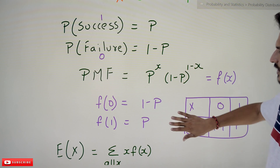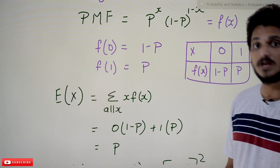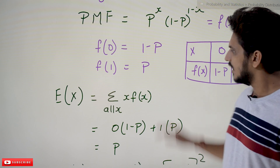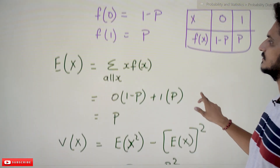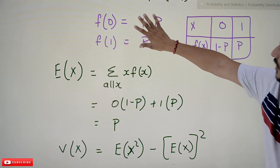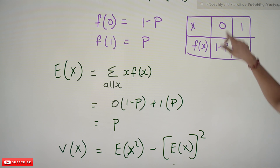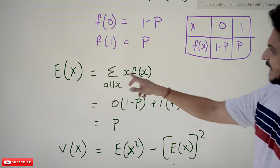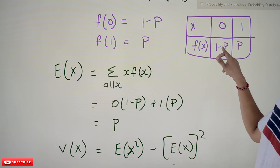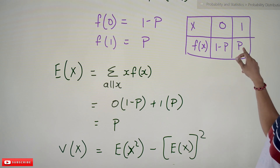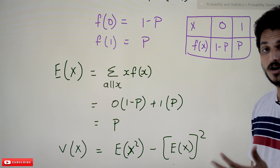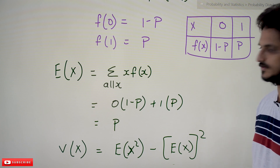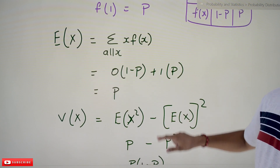If you know the probability mass function, we can find the expected value and the variance. The expected value E(X) = Σ x · f(x). For X = 0, f(0) = 1−P; for X = 1, f(1) = P. So E(X) = 0 × (1−P) + 1 × P = P. Therefore, P is the expected value of the Bernoulli distribution.